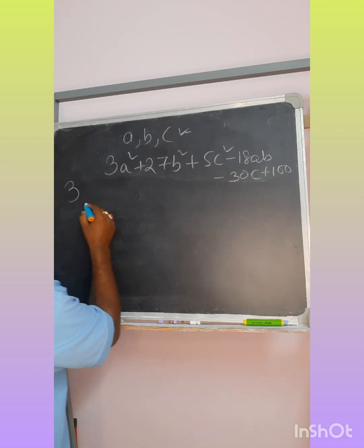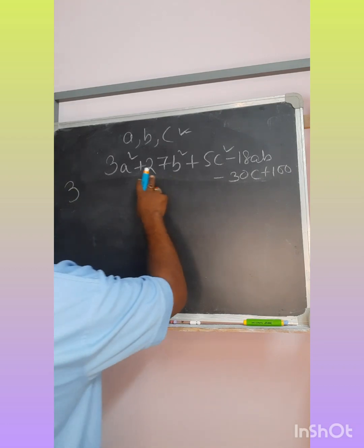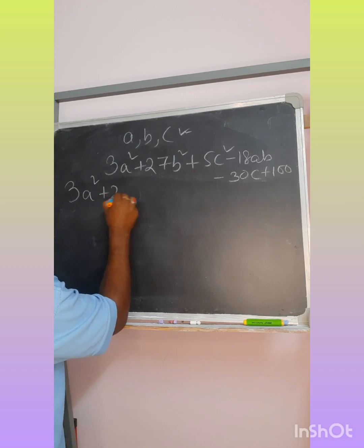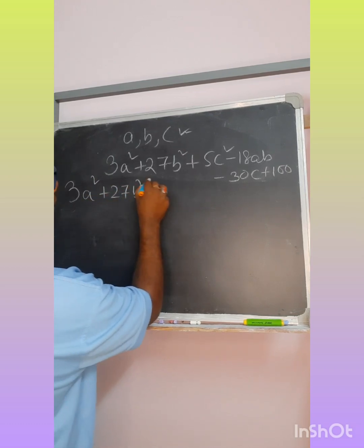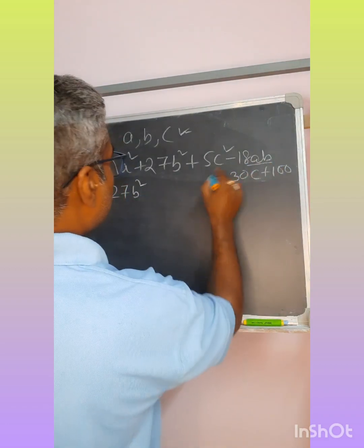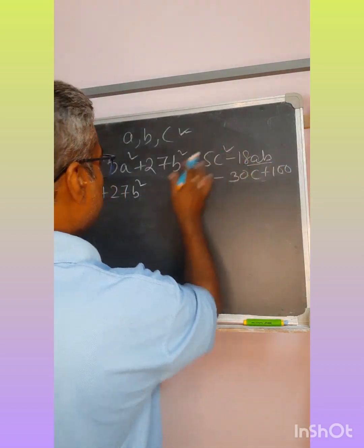I will bring this term as 3A² plus 27B². Why I am taking A and B together? Because only terms A and B are there, no C combination there.